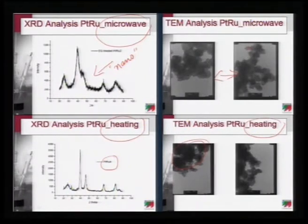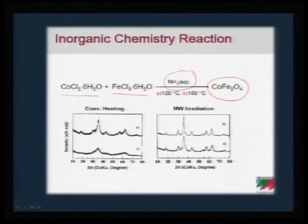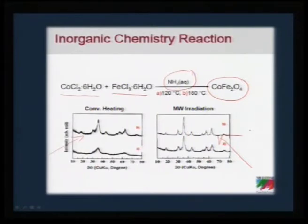If you want to make cobalt ferrite, take cobalt chloride and iron chloride, expose to microwave with ammonia reduction, and you can see the difference between conventional and microwave heating. Conventional heating maps poorly; microwave heated reactions are faster and give single phase without any problem. You can make spinel compounds using simple reduction technique and isolate the final product with much ease. Making such spinel phase materials in solid state normally requires temperatures above 800°C, but microwave can speed this up in no time.